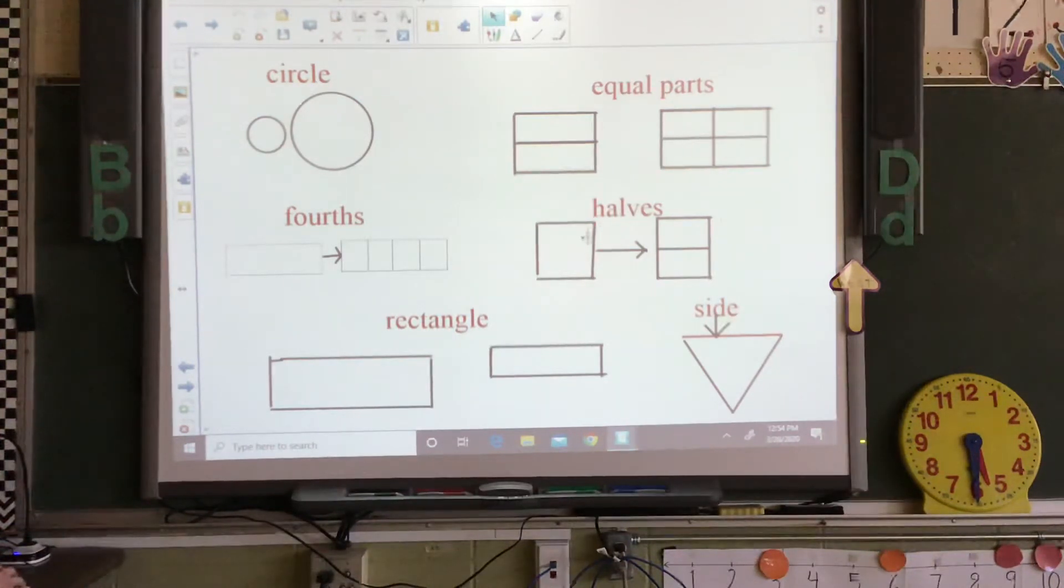Our next one is halves. So you have a shape and then you divide it into two equal parts and each part is one half.